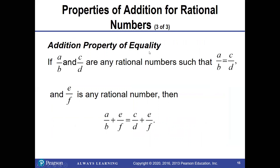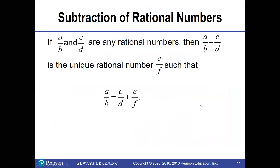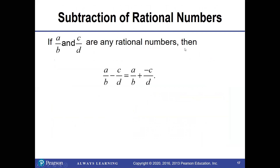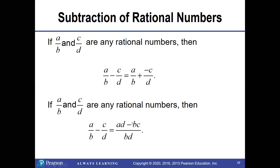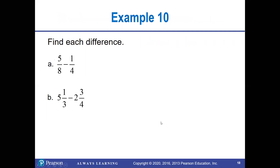The addition property of equality: if two rational numbers are equal and you add the same rational number to both sides, the equality stays the same. That also applies to subtraction. Subtracting rational numbers works basically the same way — you still need a common denominator, and a rational number minus another rational number is the same as adding the opposite.